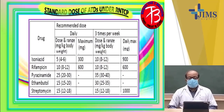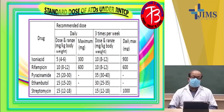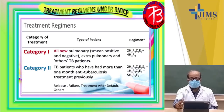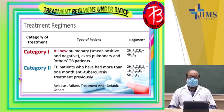This slide shows the ATDs given as per milligram per kilogram of body weight. You can look at this slide in detail and try to remember them. This is especially helpful for children where the weight is less than 30kg. Now we come to the treatment regimens under RNTCP. There are two types: category 1 and category 2.